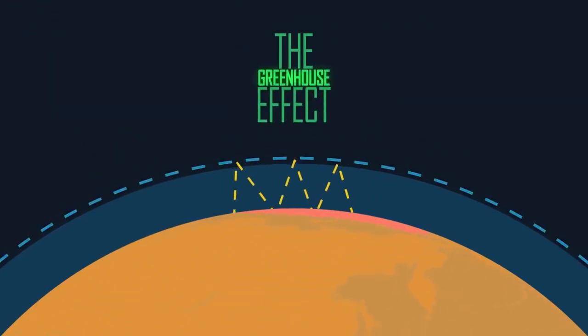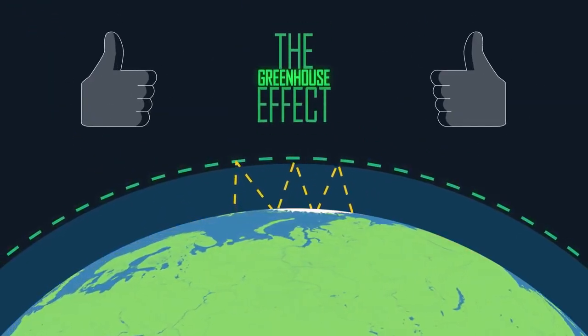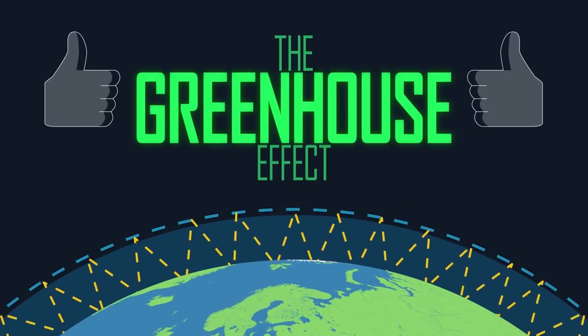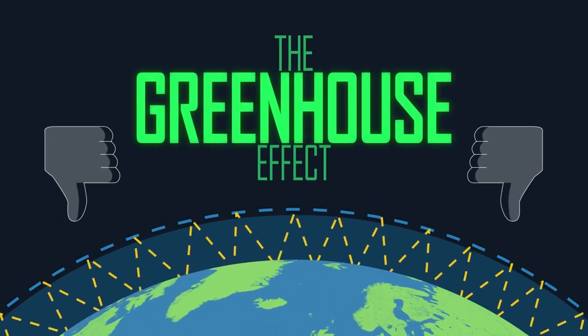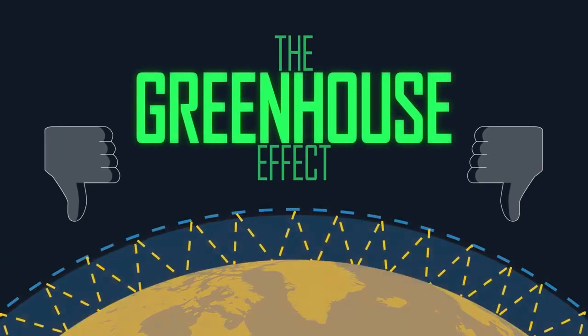Now, a little greenhouse effect is natural to the Earth and is a good thing to have, but a large greenhouse effect can be catastrophic, causing a lot of that energy to stay in our atmosphere and heat up the Earth at an accelerating rate.